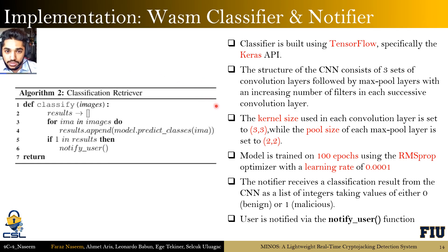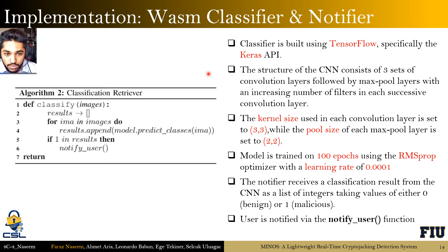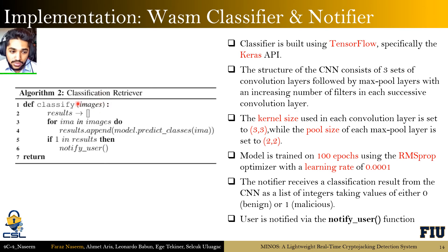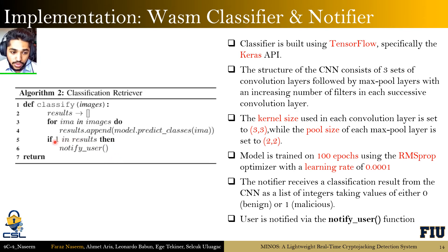The classifier is a simple CNN built using TensorFlow and Keras. It consists of three sets of convolution layers followed by max pool layers with an increasing number of filters in each convolution layer. The kernel size is set to 3×3 with pool size 2×2. The model is trained for 100 epochs using the RMSprop optimizer with a learning rate of 0.0001. The function takes the converted images and sends them to the model to receive a prediction. Those predictions are appended to an array, and if any prediction indicates a malicious binary — a one, versus zero for benign — the user is notified through the notify_user function.